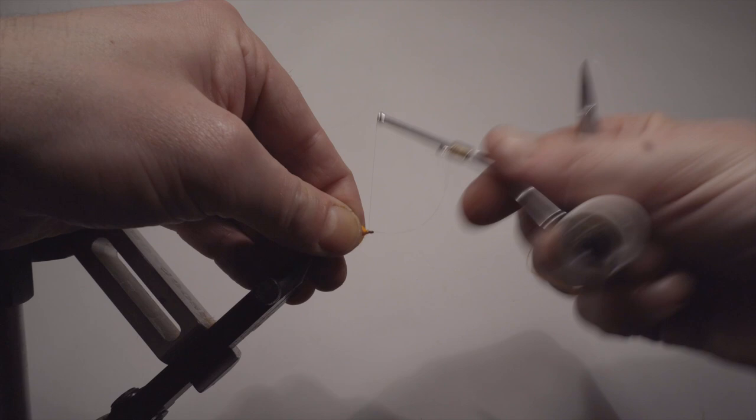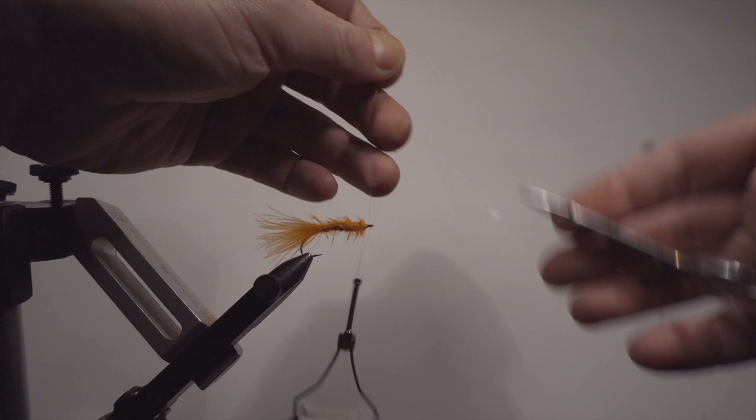But of course, if you add the ribbing, which I nowadays do, the fly will last longer. You don't have to tie as many flies, of course. Then you cut it off.